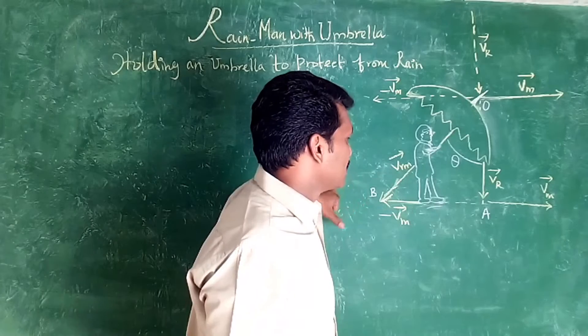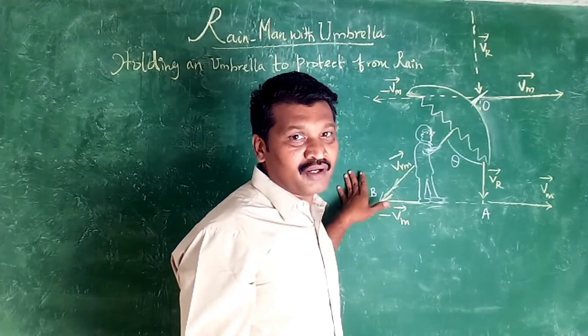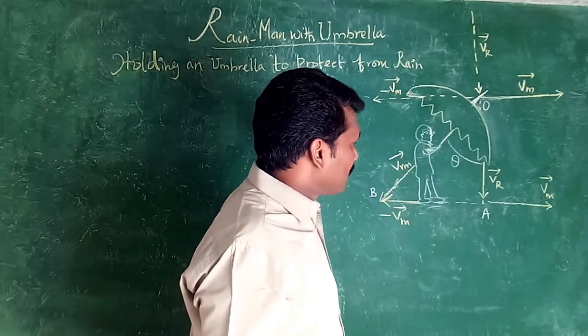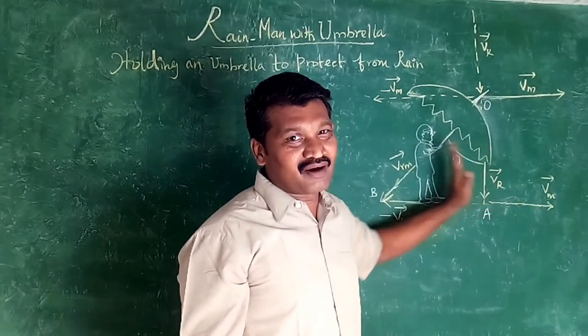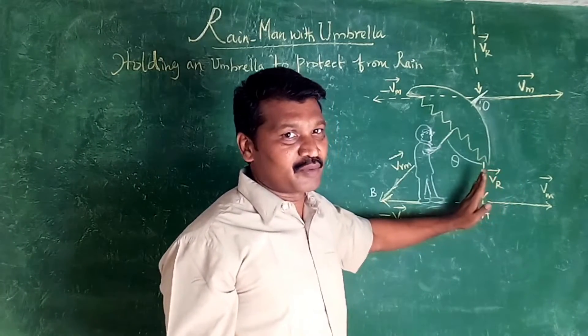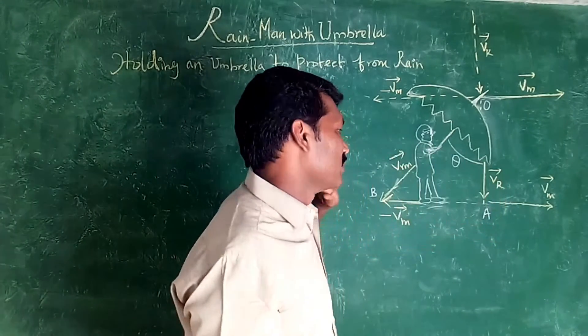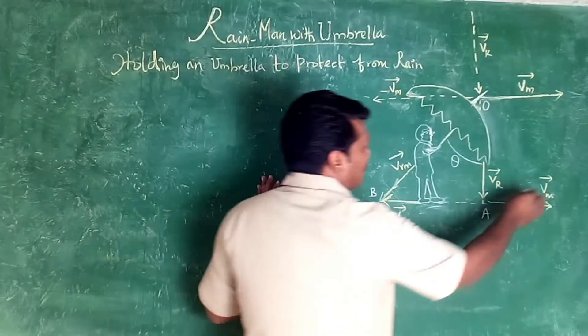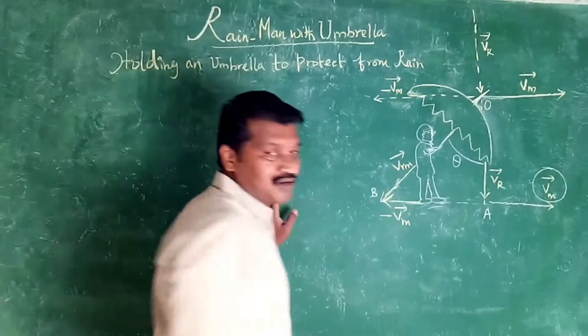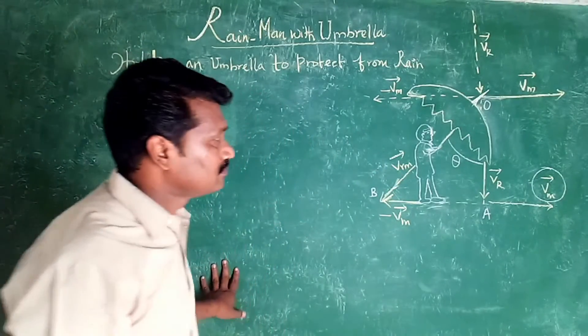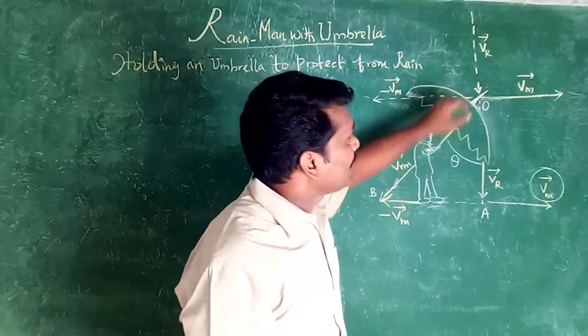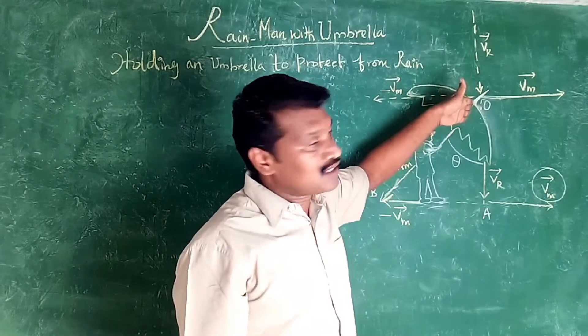He is moving from left to right, either north to south. From north to south he is moving. The Vm of this one is the velocity of man. Rain is falling vertically. Because rain is falling vertically.